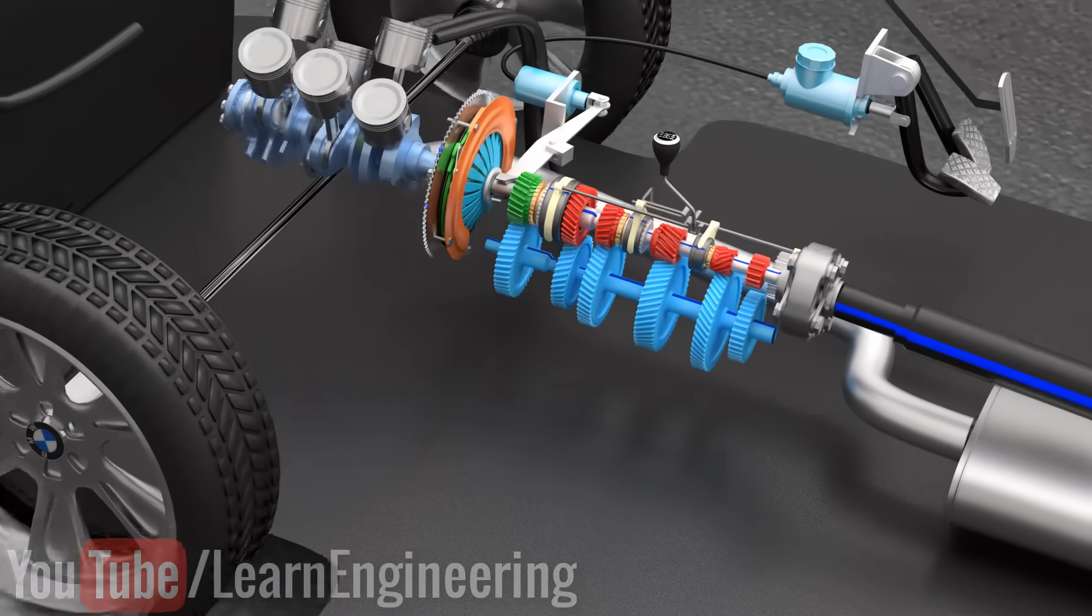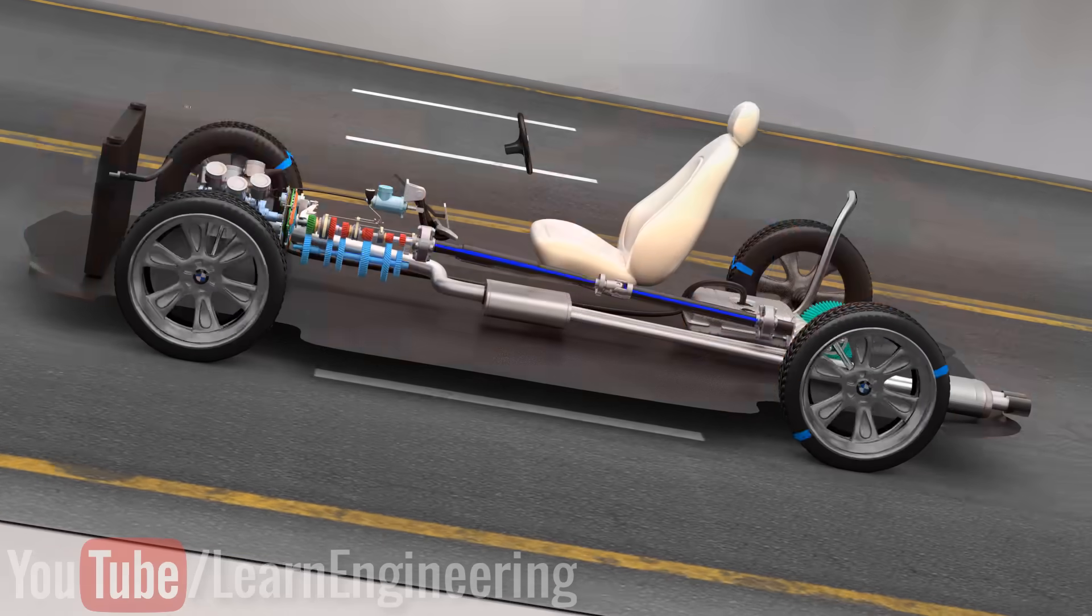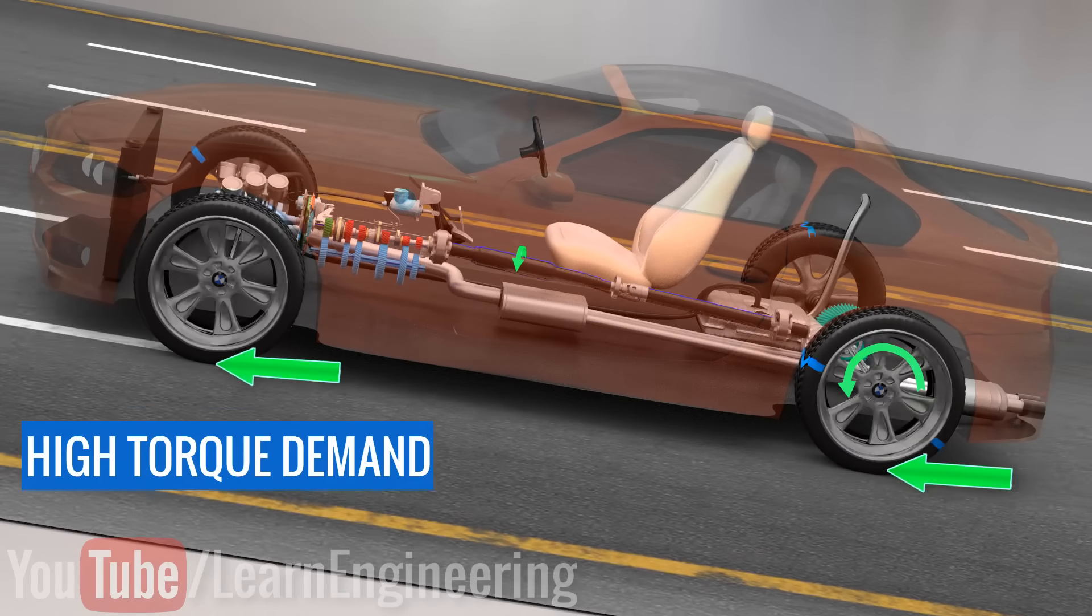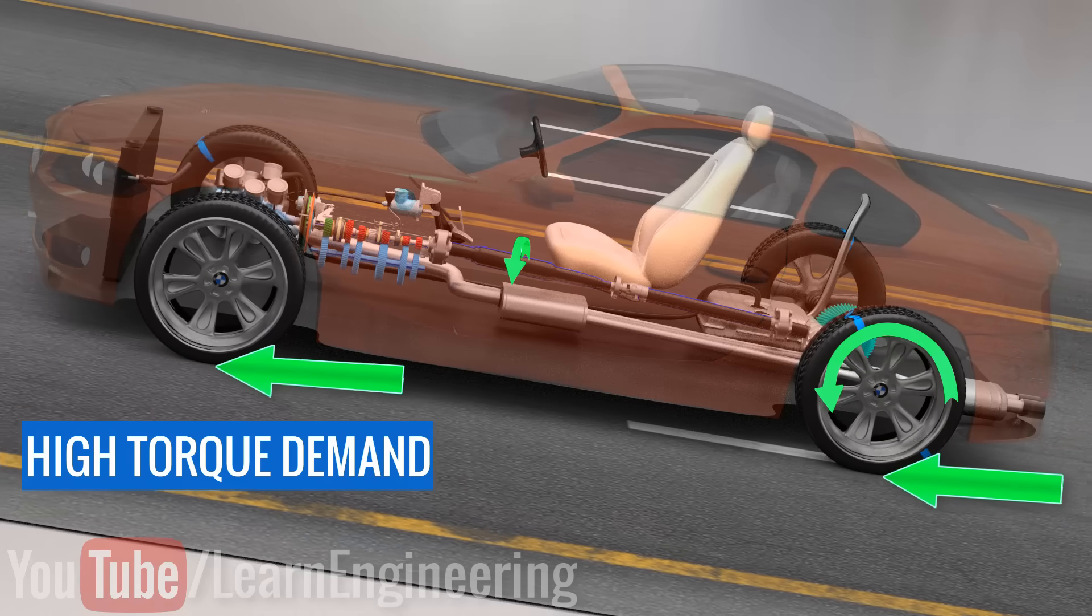Let's see an example of both cases. To climb this hill, the vehicle needs high torque. This is the reason why you use a lower gear on a hill, otherwise the engine will stall.